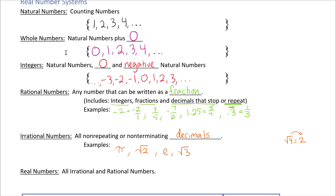The last number system we'll discuss is the real numbers. All real numbers consist of all rationals and irrationals together — basically every number you've ever dealt with in your whole life is a real number. There is one other category of numbers we won't cover today; you'll learn about it in upper-level math classes.